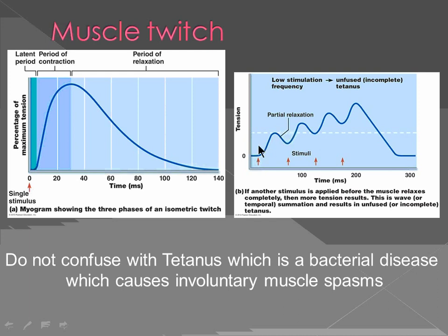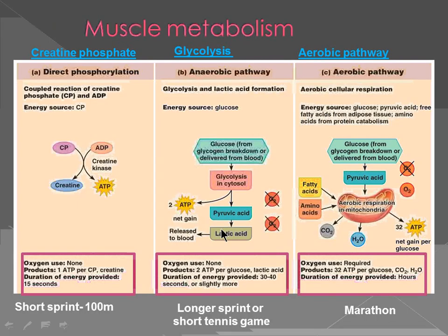Fused tetanus is different from the bacterial infection you vaccinate against. Fused tetanus here is a physiological state — not irreversible. Once you stop the heavy effort and relax, the muscle will relax and come back. Complete tetanus is because stimuli are hitting the muscle so fast and quickly that it is not allowed to relax at all — like when you are trying to lift a really heavy object, the muscle stays contracted without relaxing in between.